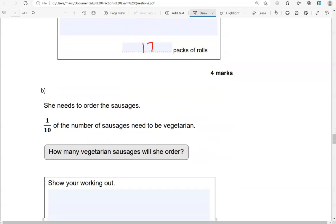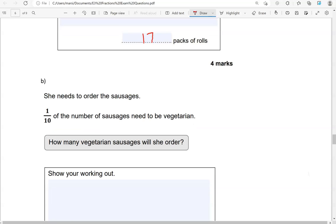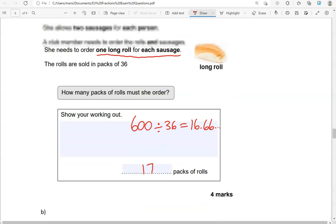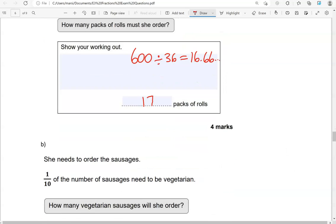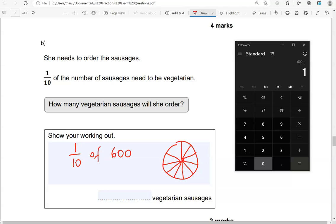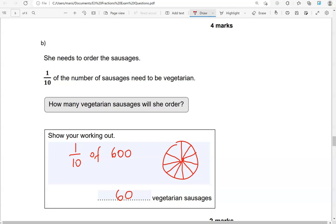So we said there were 600 sausages that needed ordering. So 1 tenth of 600 we need to work out. 1 out of the 10. So we're going to divide 600 by 10 to get 1 tenth. And that is 60. So 60 vegetarian sausages.